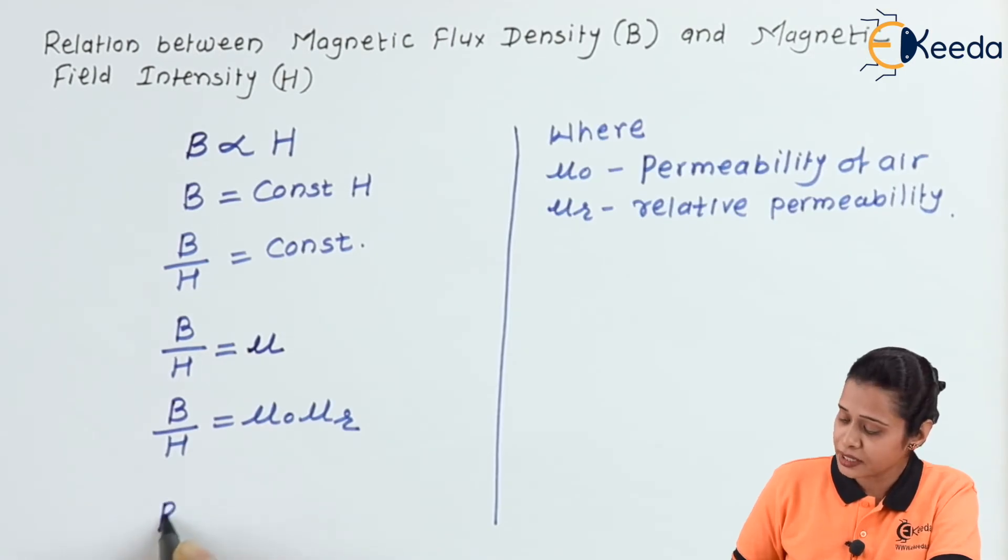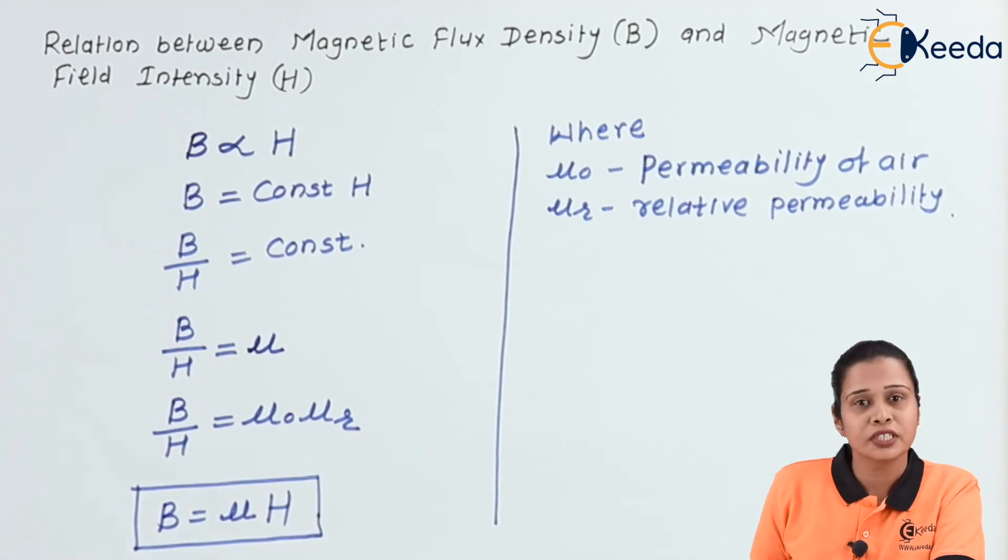Hence, we can write here B is equal to mu H. So, this is the relation between H and B. That is flux density and field intensity.